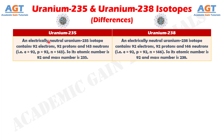Difference number 1. An electrically neutral Uranium-235 isotope contains 92 electrons, 92 protons, and 143 neutrons, so its atomic number is 92 and mass number is 235. Whereas an electrically neutral Uranium-238 isotope contains 92 electrons, 92 protons, and 146 neutrons, so its atomic number is 92 and mass number is 238.